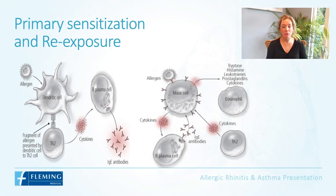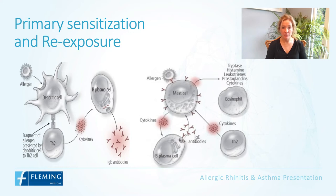Before looking at specific drugs, let's briefly review the immunology of allergic rhinitis to understand why we use particular medications. There are two phases: primary sensitization and re-exposure to the allergen. If the allergen is grass pollen, the patient is first exposed to it, which is taken up by an antigen-presenting cell or dendritic cell, broken down into small peptides, and presented to naive T-cells, which then transform into Th2 cells and secrete cytokines — IL-4, IL-5, and IL-13.